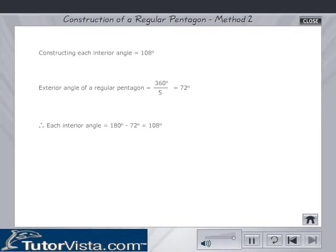Method 2: Constructing each interior angle equal to 108 degrees. The exterior angle of a regular pentagon is equal to 360 degrees by 5, which is equal to 72 degrees.